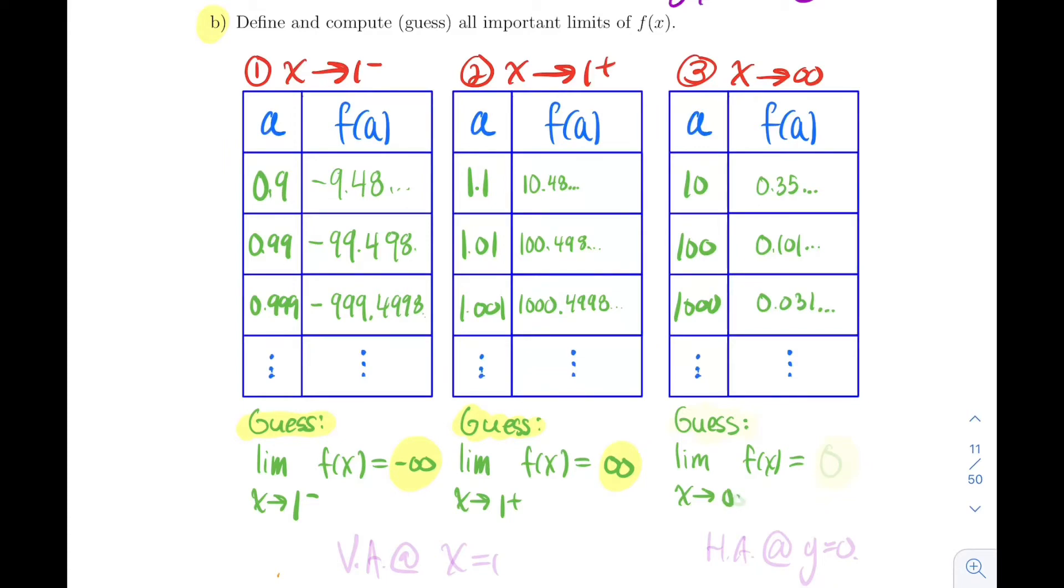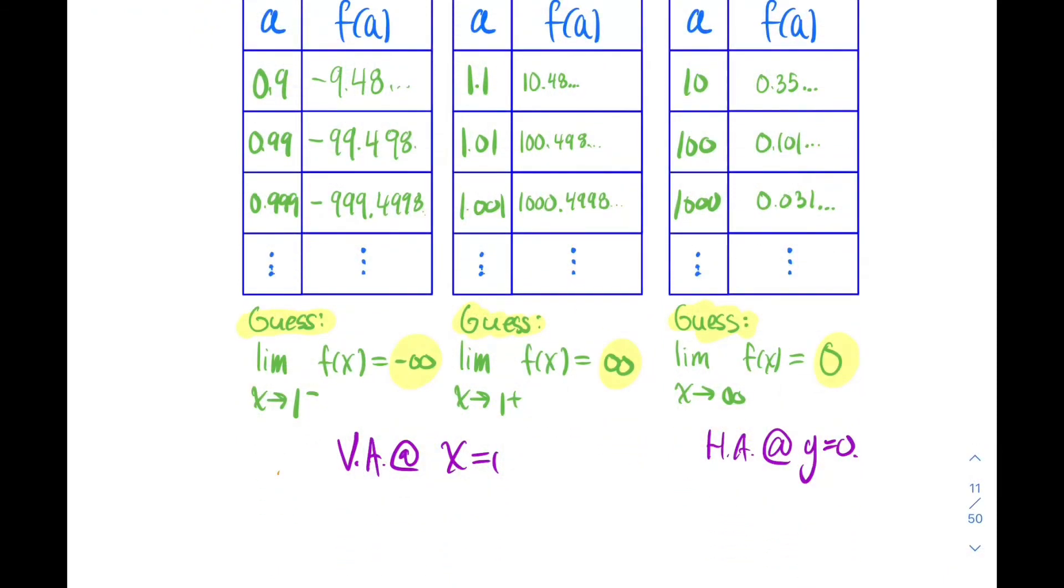My guess here with these numbers is that the limit as x goes to infinity is 0, so horizontal asymptote probably. If I have to comment on what's up here, I have a vertical asymptote at x equal 1, and I have a horizontal asymptote going to infinity at y equals 0.